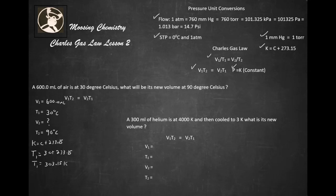Now for our second one, we have our T2 value is going to be 90 plus 273.15. Let's get the calculator. So our new T2 value is going to be 90 plus 273.15, which equals 363.15 Kelvin.